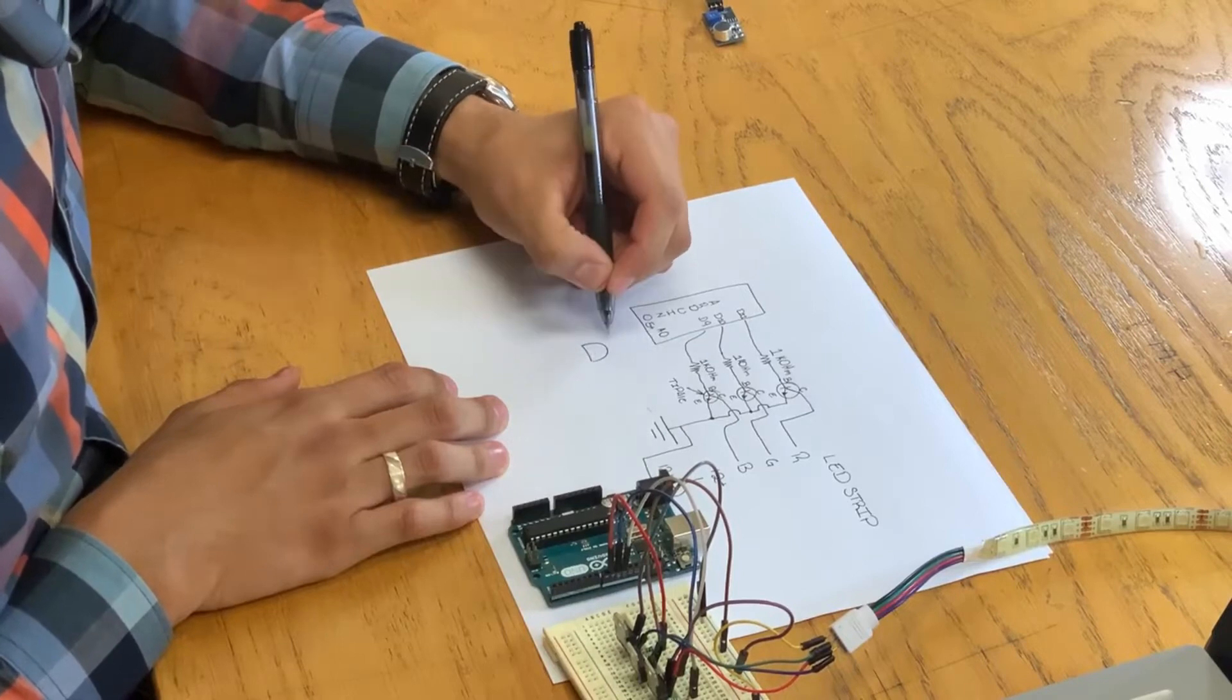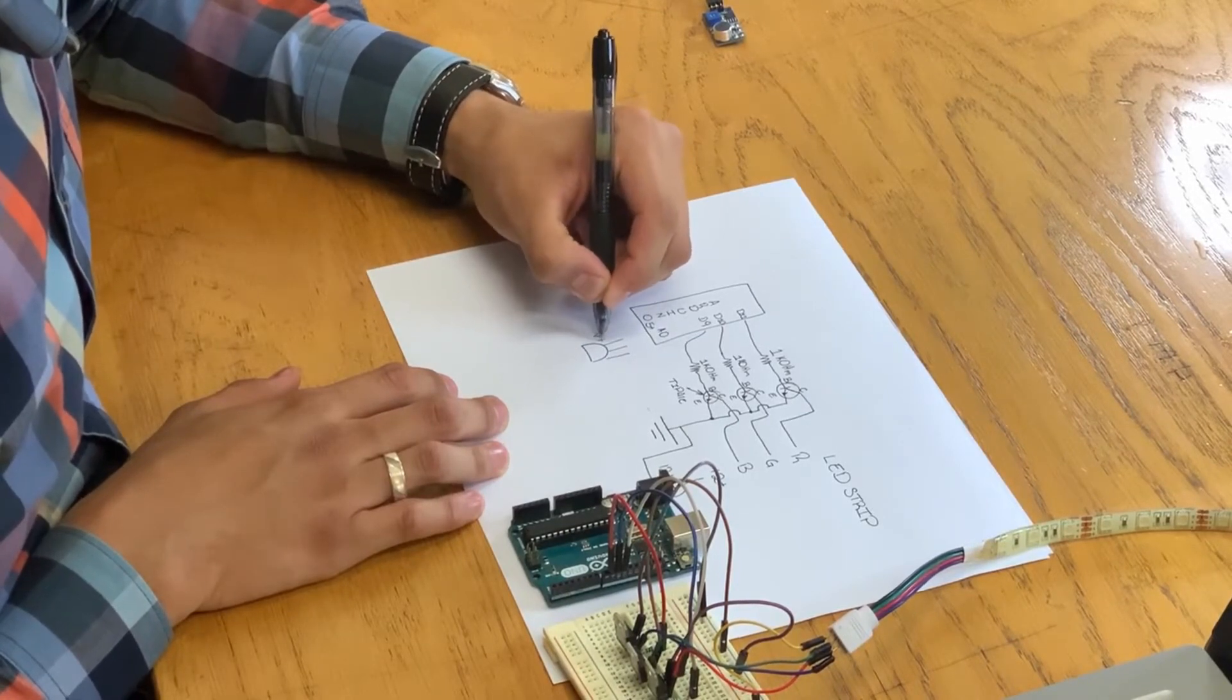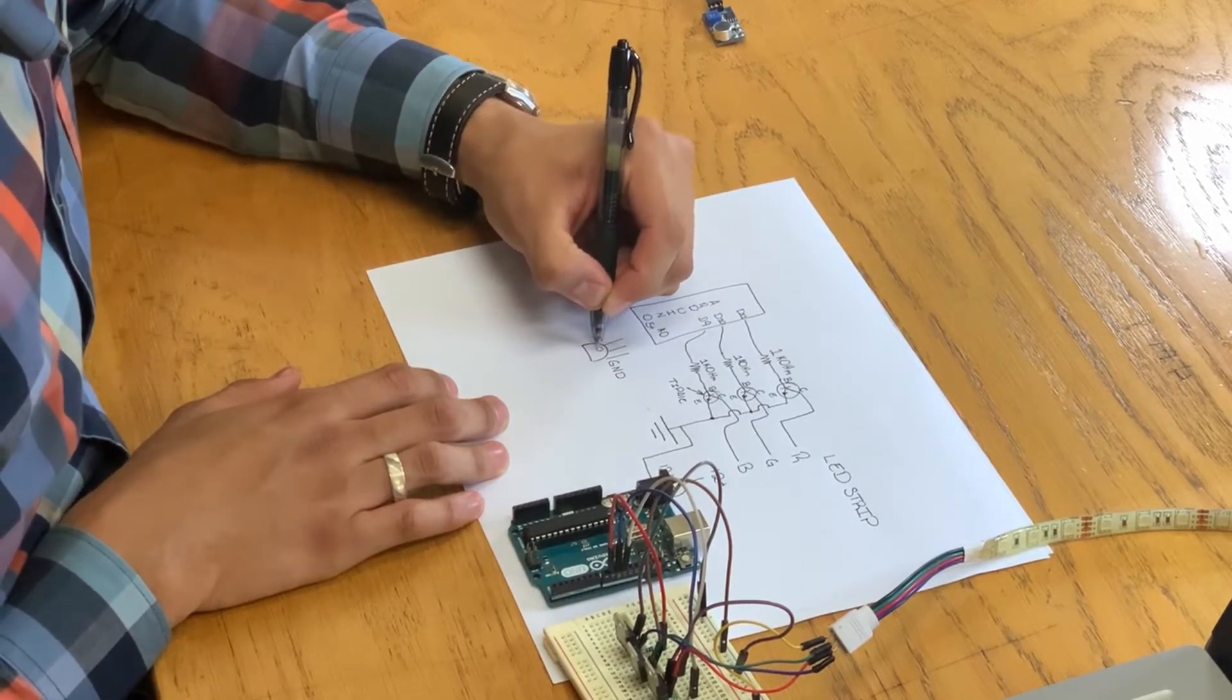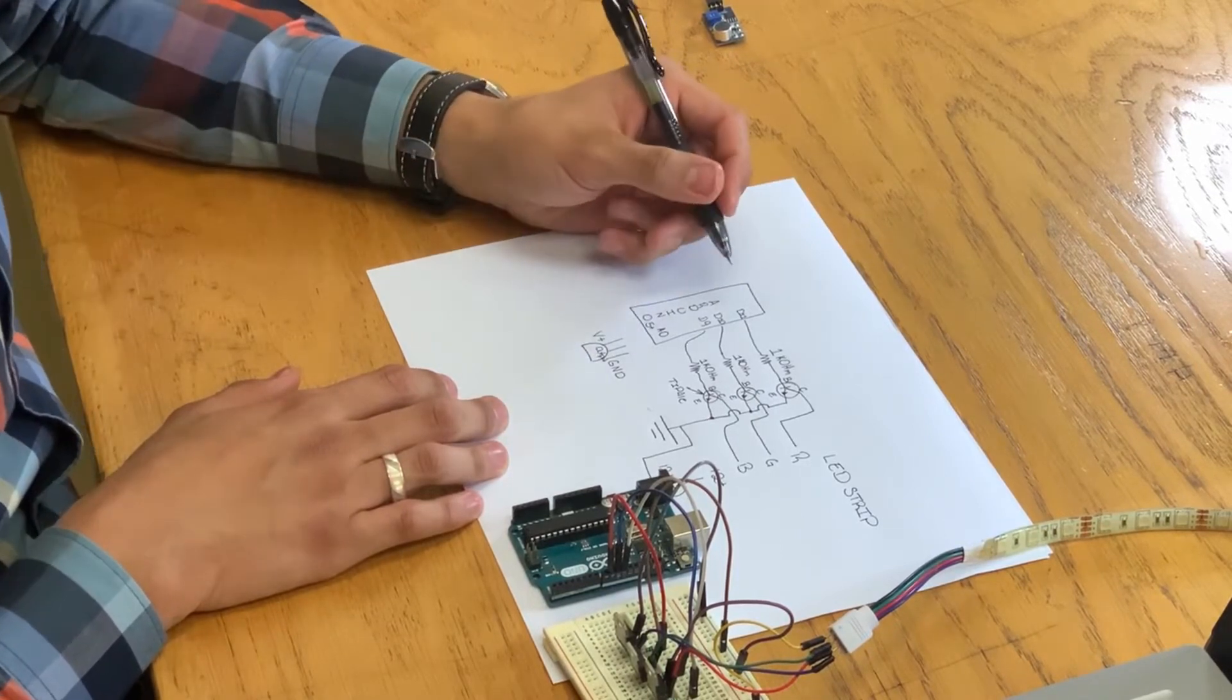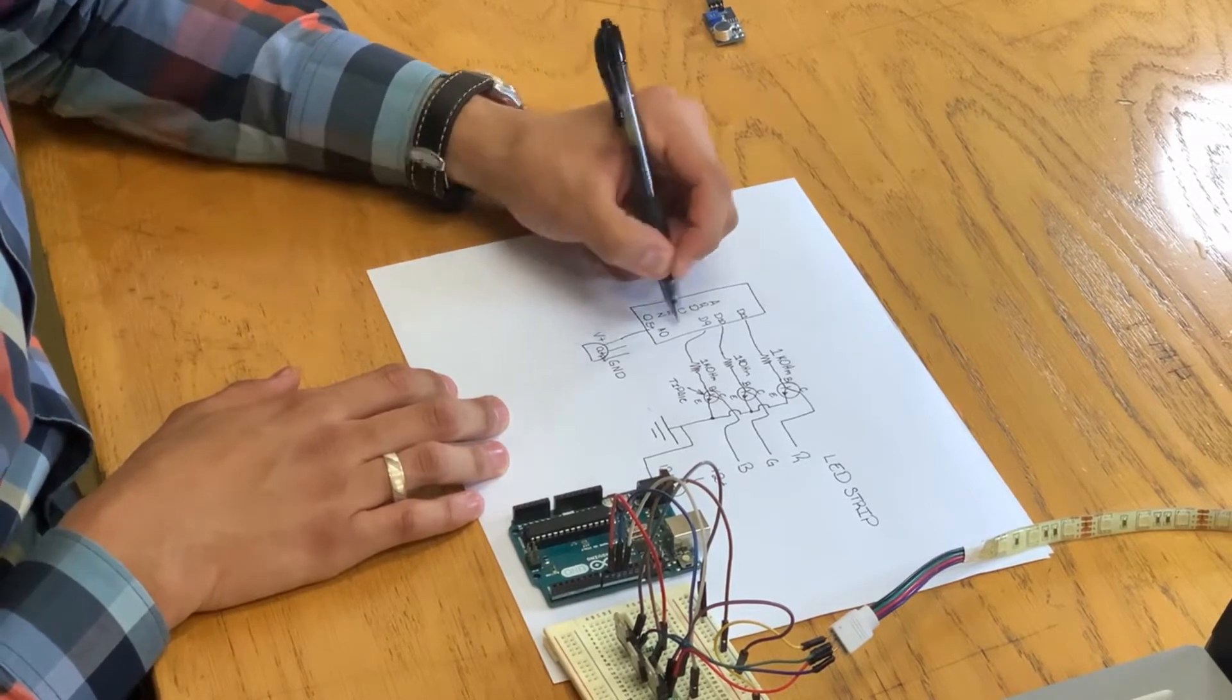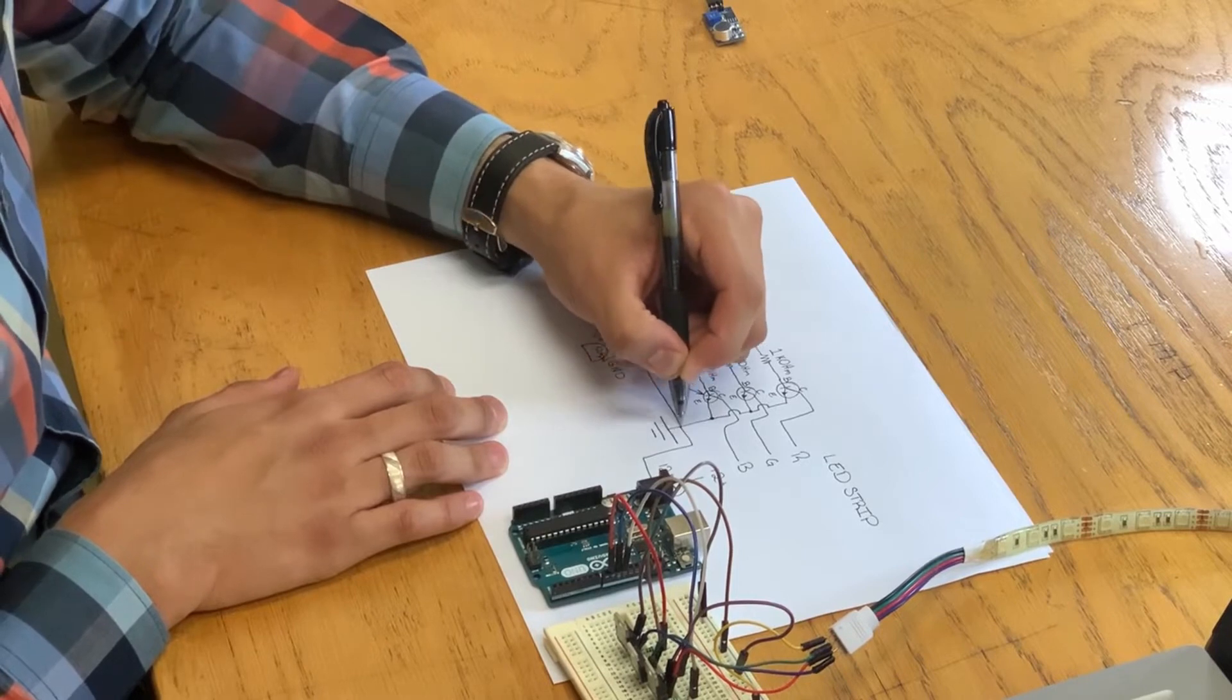And finally, our last component of our circuit. This will be our sound sensor, which has three pins: input voltage, output which is the signal from the sensor, and ground. We'll connect the input voltage to 5 volts, sensor ground to Arduino ground, and output to the Arduino analog pin A0.